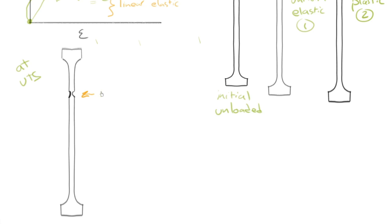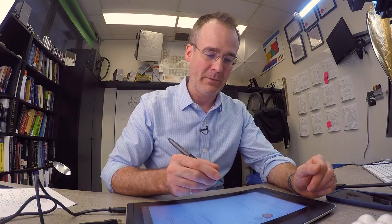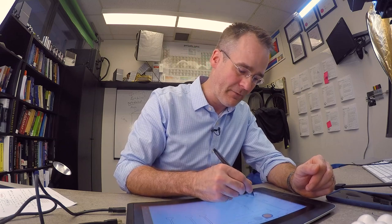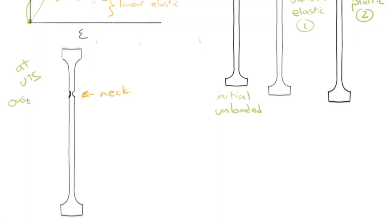That might look a little bit like a neck of an animal or something like that, or of a human. But it's called a neck. At the UTS, we could say that we have the onset, or the beginning, of necking.